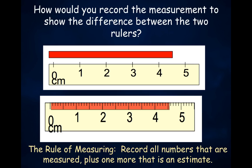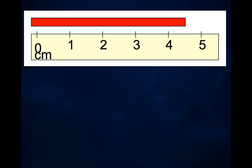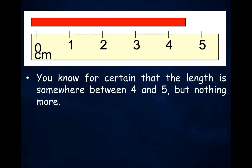Let's consider each of these rulers. For the first ruler, you know for certain that the length is somewhere between 4 and 5, but nothing more. You don't know for certain whether it's 0.1, 0.2, 0.3, or any tenth value up to 0.9. You only know that the length of the red line is somewhere between 4 and 5.